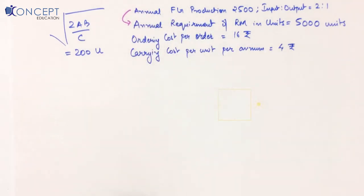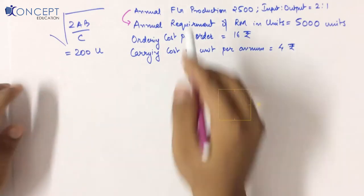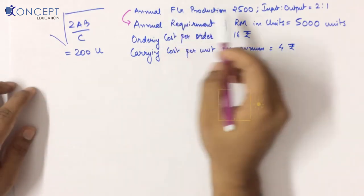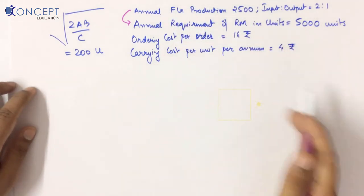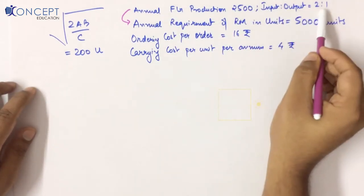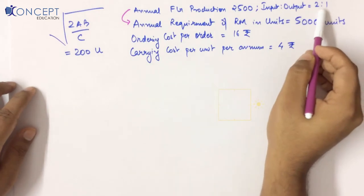Usually in a question paper, the examiner will twist it — the finished goods requirement is given, but somewhere the input-output ratio is 2 to 1. You need to be careful to use the raw material requirement, not the finished goods figure.